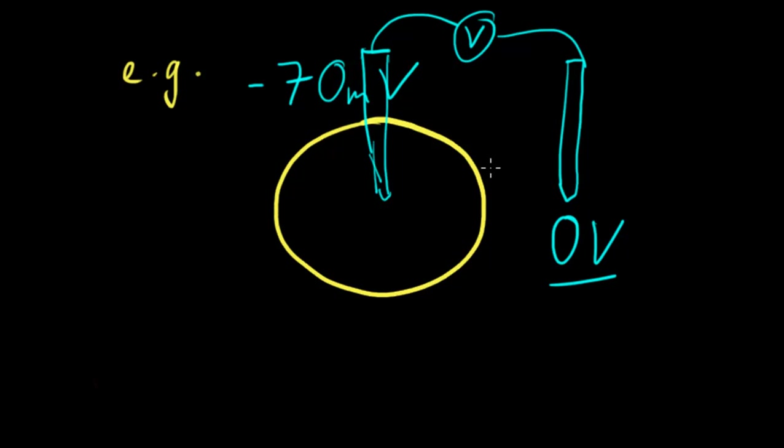So I'll just draw in that. So it's negative on the inside and slightly positive on the outside. And just so everyone, if you're unsure, one millivolt is the same as 0.001 volts. So it's only a small charge, but it is measurable and it is there.